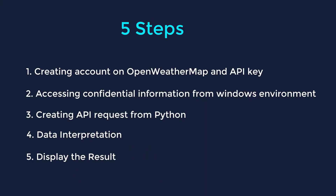Let's get started. We are going to divide the complete project into five steps. The first step is to create an account on OpenWeatherMap and get an API key. The second step is to access the API key securely from the Windows environment variable. The third step is to create an API request from Python. The fourth step is data interpretation, since the API response is in JSON format. The fifth step is displaying the results.